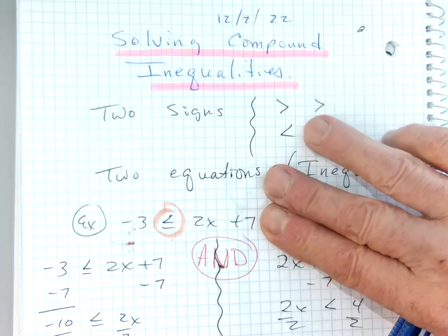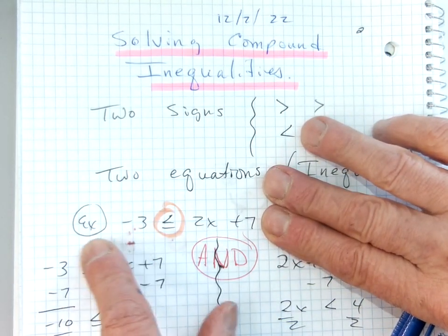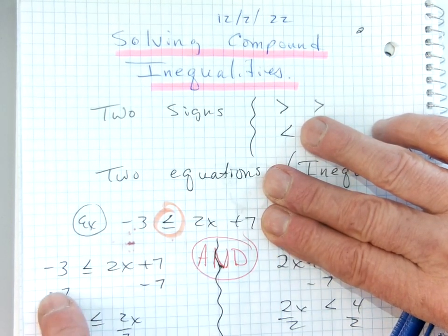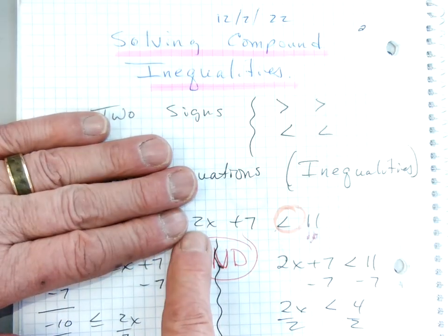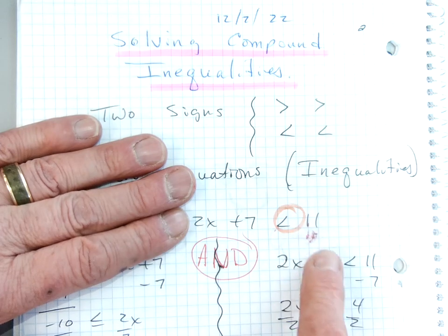We have this first equation right here: negative 3 less than or equal to 2x plus 7. So I wrote that down. And I have a second equation right here: 2x plus 7 is less than 11. I wrote that over here.